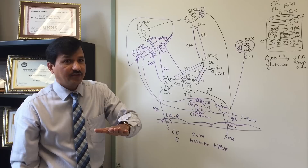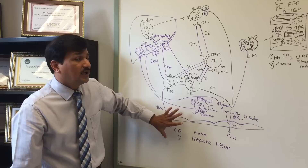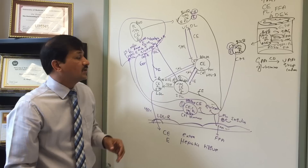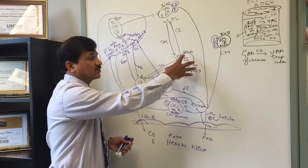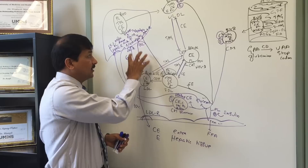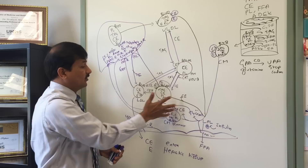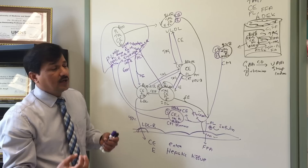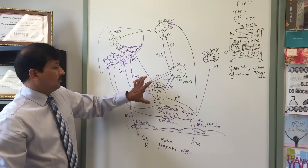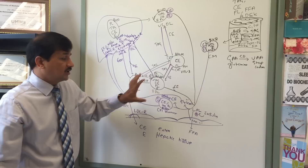Tissues that need cholesterol express high levels of LDL receptor; tissues with plenty of cholesterol decrease LDL receptor expression. This means tissues needing cholesterol take up LDL, while those with sufficient cholesterol do not. CETP function is essentially about redistributing cholesterol from tissues that have plenty to tissues that have less — that is how cholesterol redistribution occurs.